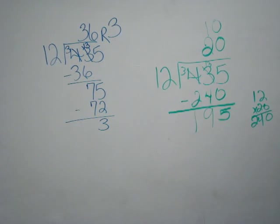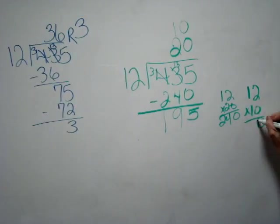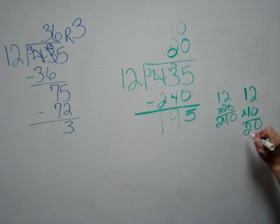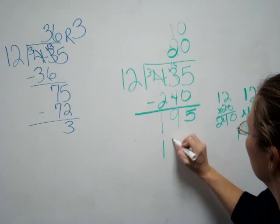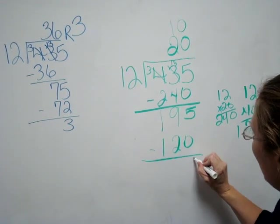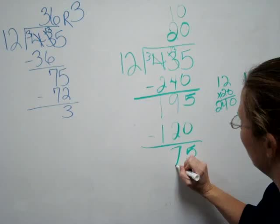So I'm going to put 10 up here, multiply 12 times 10 off to the side, and that's 120. Now I'm going to subtract, and that's going to give me 75.